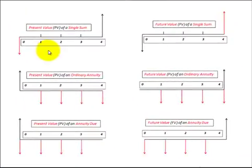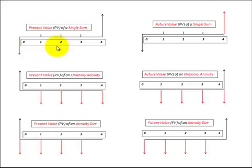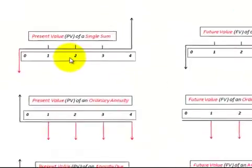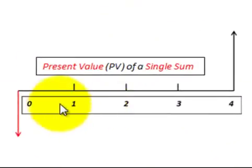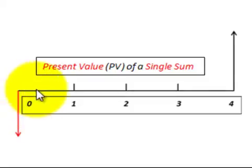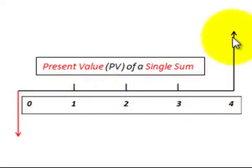In this presentation I'm going to go over our six basic cash flow diagrams that we use in our accounting and textbooks. First let's look at the present value diagrams. Present value is where we have to determine what the present value is based on a known amount out in the future.